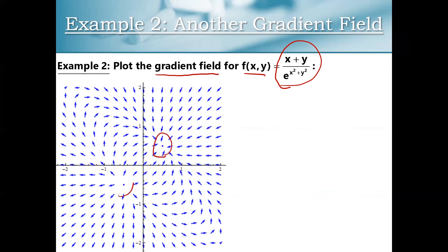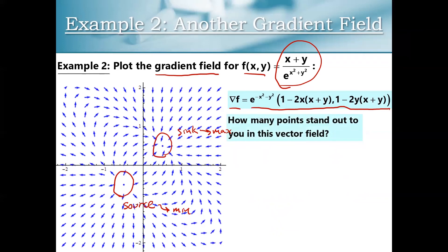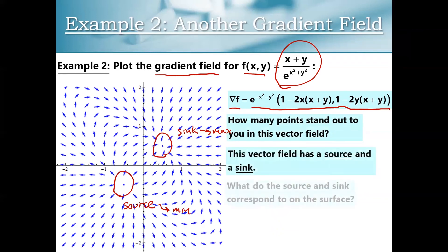We have two very interesting points: a sink in the first quadrant and a source in the third quadrant. This sink in the first quadrant is going to be associated with a maximum on the surface, and this source is going to be associated with a minimum on the surface. You can compute the gradient to make this gradient vector field. When we have a gradient field, we know that our source is going to be associated with a minimum on the surface and our sink is going to be associated with a maximum on the surface.